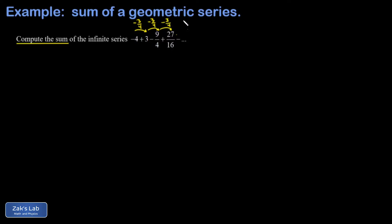So this thing is a geometric series with a starting point of negative 4, and we normally call that A. And a common ratio—in other words, the thing I multiply by every time—of negative 3 fourths.